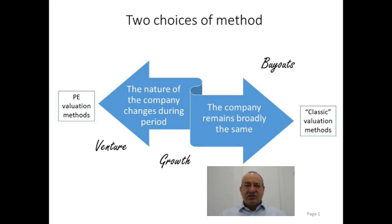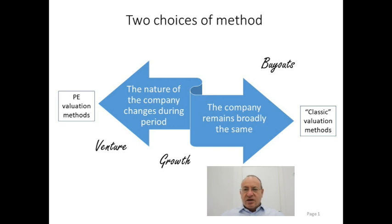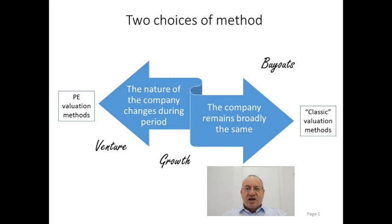Let's start with our valuation analysis. This module is about the private equity approach to valuing companies. Looking at our first slide, we have a binary choice determined by whether the nature of the company is changing during a period or remaining broadly the same. In the case of a large company that is the object of a buyout, the company remains broadly the same — the fund manager may make it more efficient or do spin-offs, but the company's nature stays broadly the same. That means the valuation methods adopted are the so-called classic methods, under which you would use a complicated LBO valuation model.